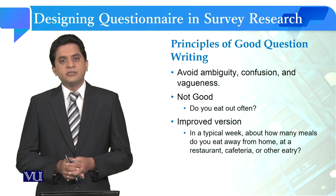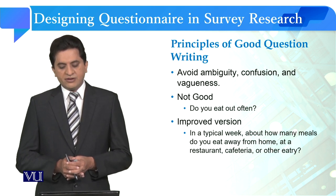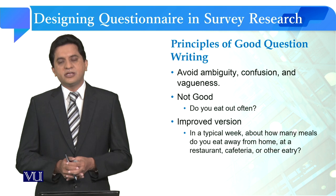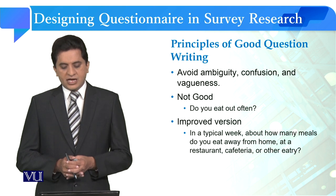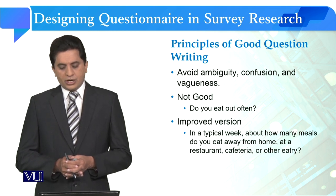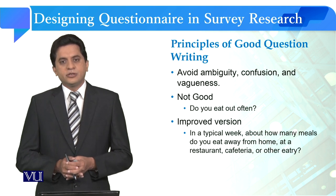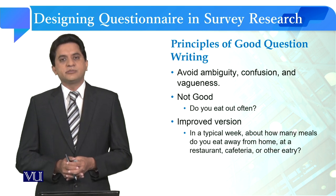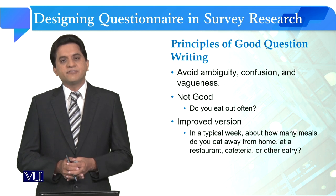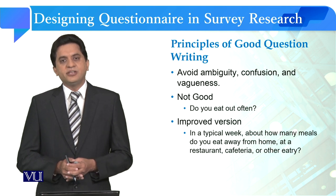The second principle is to avoid ambiguity, confusion and vagueness. For example, a better question would be: 'In a typical week, about how many meals do you eat away from home at a restaurant, cafeteria, or other eatery?' This clearly asks respondents how many times in a week they eat out at a restaurant or any other eatery.